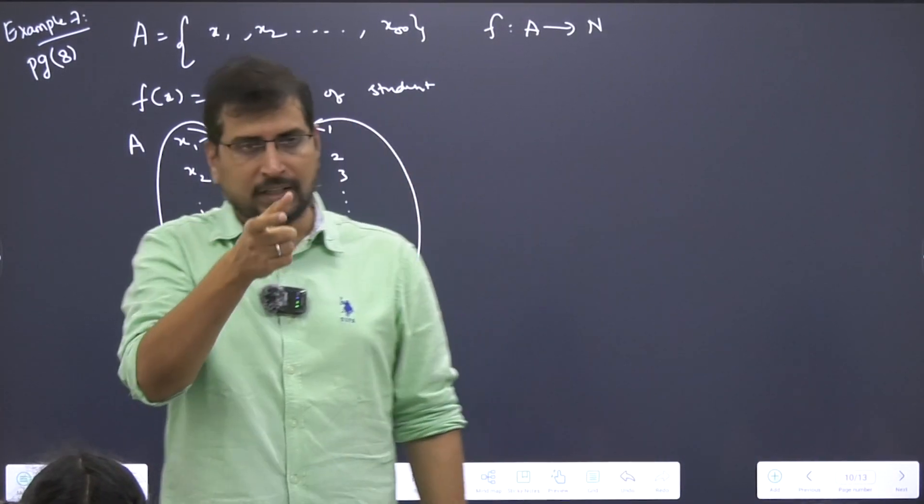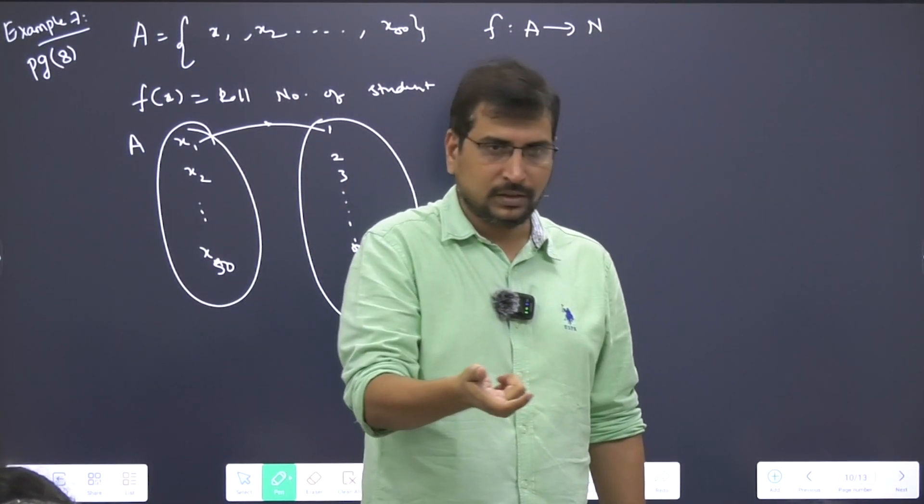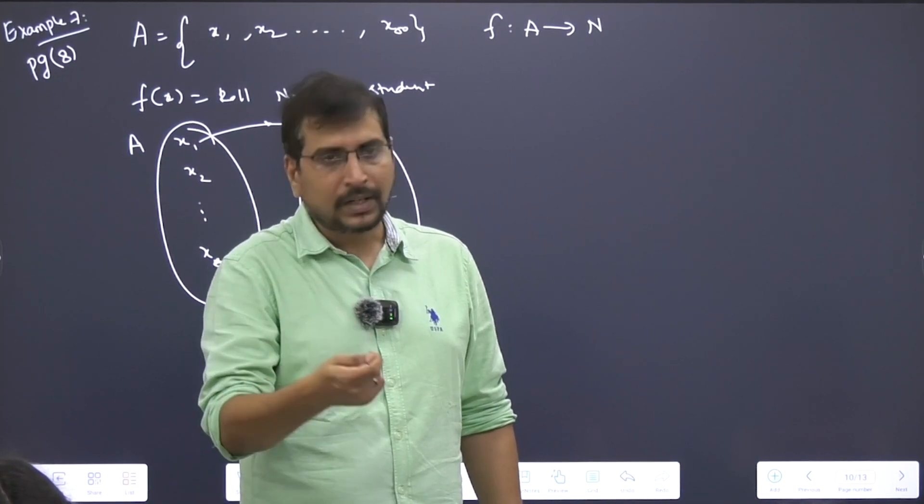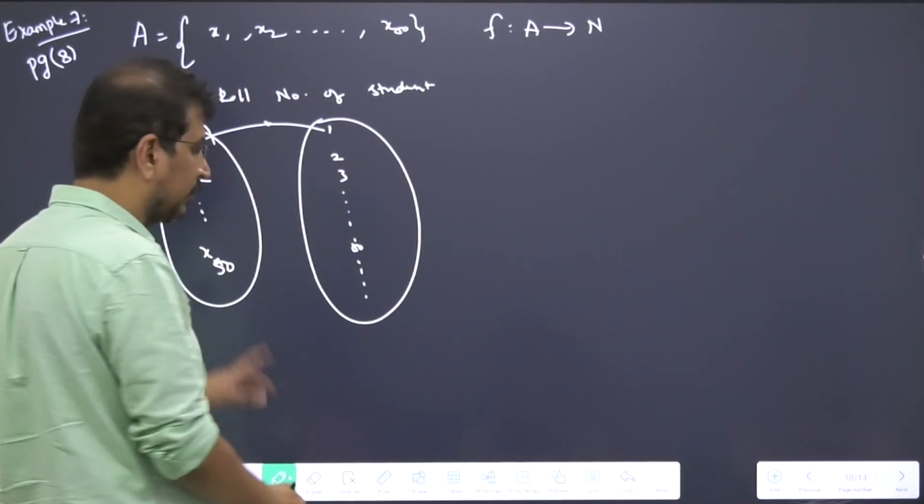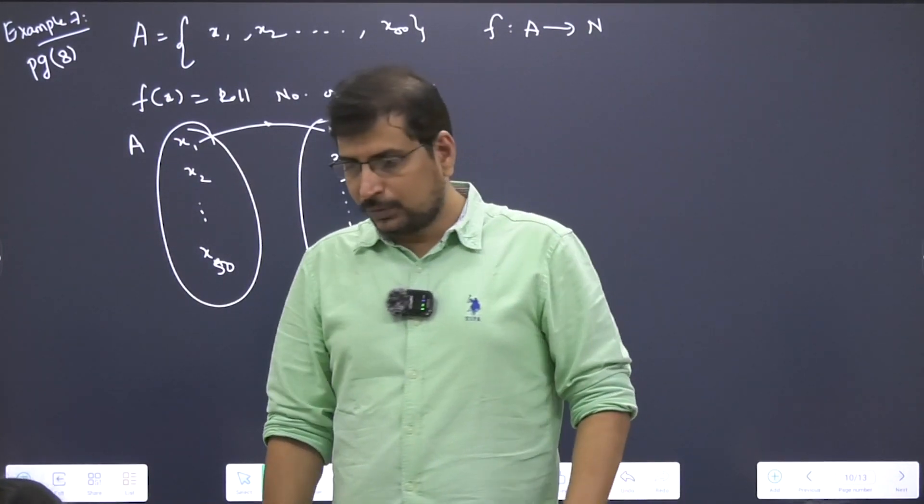For every unique input there is a unique output, hence it's a one-to-one function. What you need to write is: for every student there is going to be a unique roll number associated, so for every unique input value there is a unique output value, hence it's a one-to-one function.